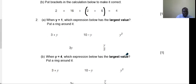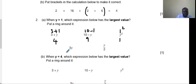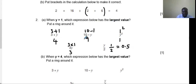Question 2: when y equals 1, which expression below has the largest value? Put a ring around it. So when y is 1: 3 plus 1 = 4; 10 minus 1 = 9; 1 squared = 1; 3y = 3 times 1 = 3; y divided by 2 = 0.5. The largest number is 9, so the expression is 10 minus 1 — put a ring there.